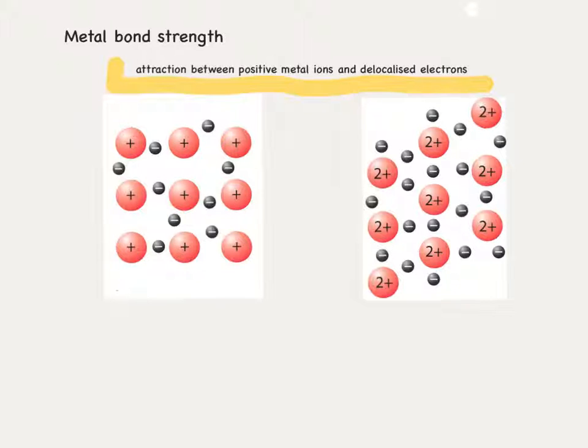And what this means is that we can alter the strength of the bond by changing the charge and the number of electrons. So if we look at this example here, we might have sodium plus ions in a regular arrangement of positive ions, and they will also have one free electron per metal ion.